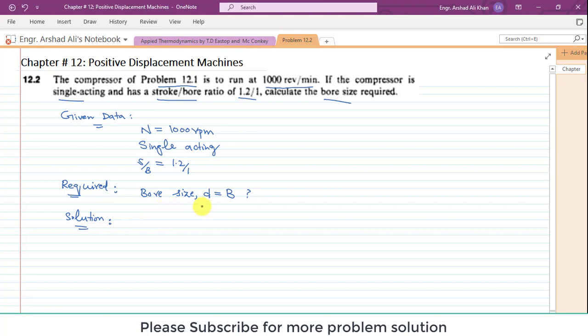For the solution, we have to first identify which expression can be used to find the value of bore size. The simple expression used is the volume of the cylinder: V is equal to pi by 4 into d squared into L.